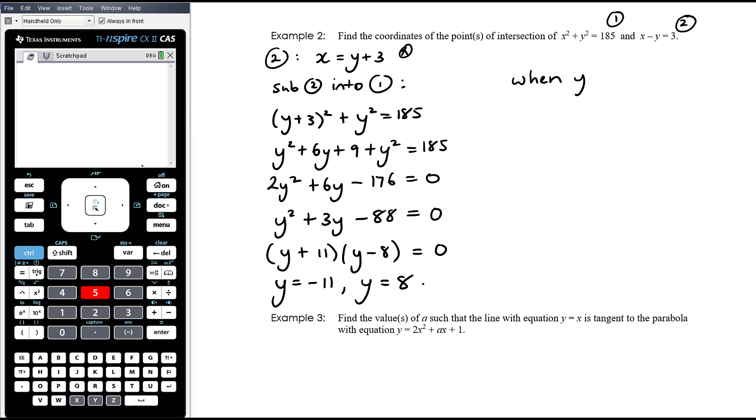So we know when y equals 8, x is going to be equal to 8 plus 3, which is 11. So that's the point 11, 8. And we know when y equals negative 11, x is going to be negative 11 plus 3. So I'm subbing back into that equation 2, which is negative 8. And so that is the point negative 8, negative 11. So coordinates of the points of intersection between those two graphs.